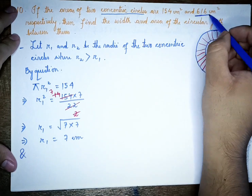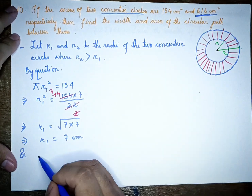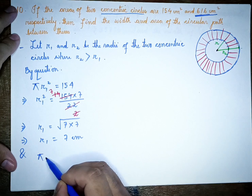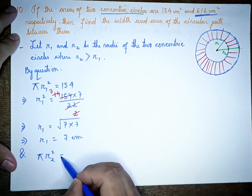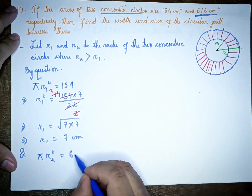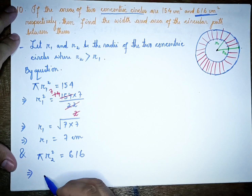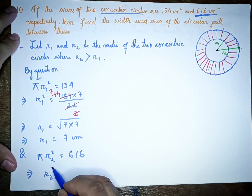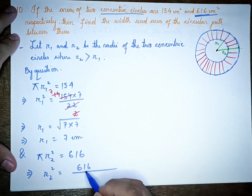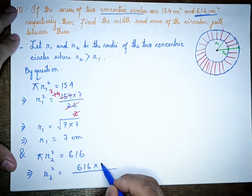Next, for the larger circle of area 616 cm²: π r2² = 616, which implies r2² = 616 × 7 ÷ 22.